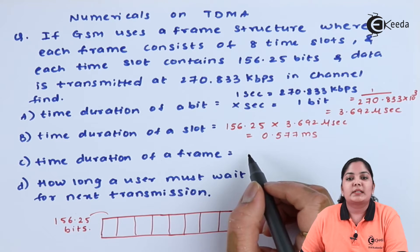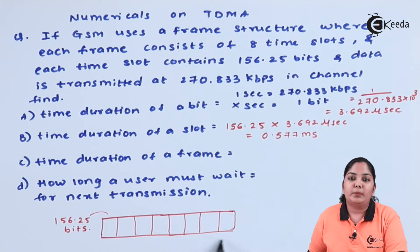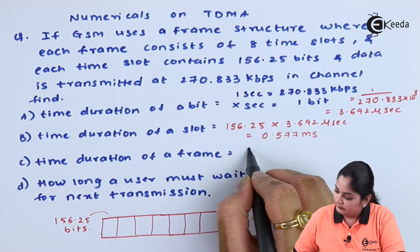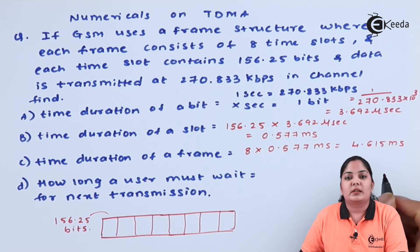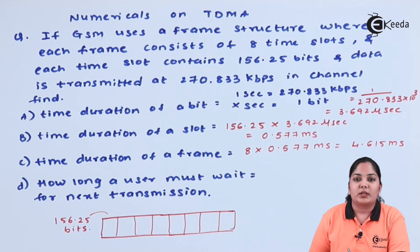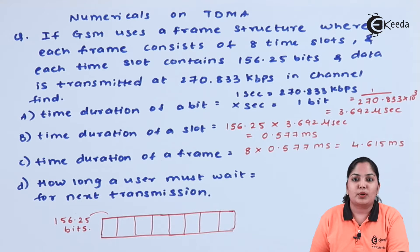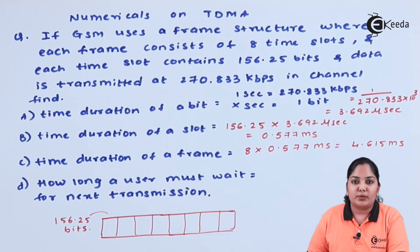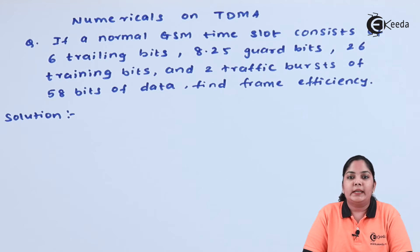The third question asks for the time duration of a single frame. Since we know the time duration of one slot, we multiply it by 8 to get the total frame duration. The answer is 4.615 milliseconds. The final question asks how long a user must wait for the next transmission — since a user is allowed only one slot per frame, the wait time equals the full frame duration: 4.615 milliseconds.